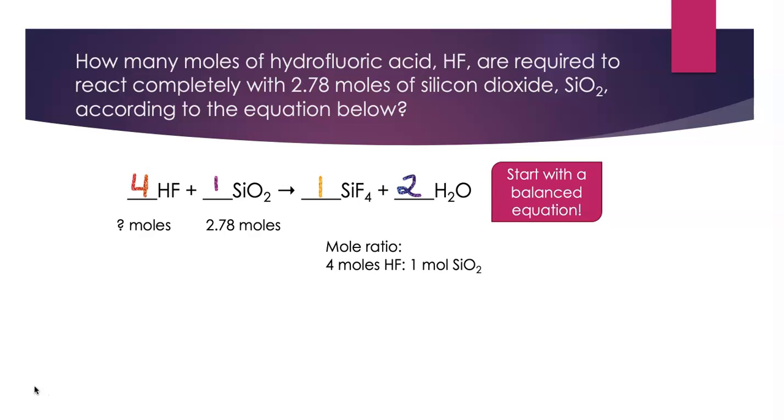The balanced equation tells us I have four moles of HF for every mole of SiO2. That's the information I need to set up my factor label. I always like to set up my factor label. X what I'm solving for equals what I'm given.